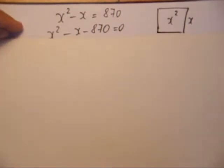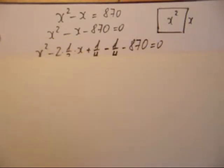Je passe 870 dans le premier membre. Je soustrais 870.